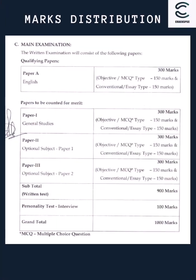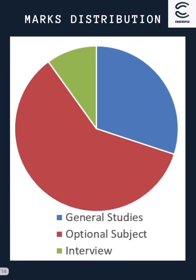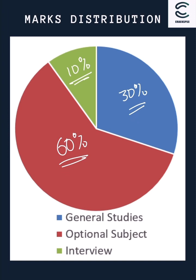Regarding general strategy, I previously made a video on marks distribution — you can check it out. Briefly: the optional carries 300 plus 300, maximum 600. General Studies carries 300 max. The English paper is just qualifying — it won't be counted. The personality/interview is 100 max. So graphically, optional carries 60% weightage, General Studies 30%, and interview 10%. Optional is very very important, so you should focus on it monthly.